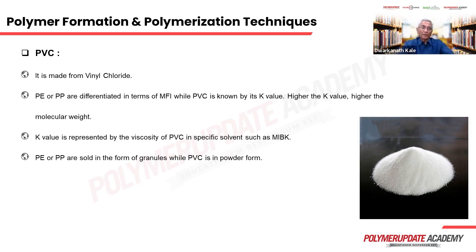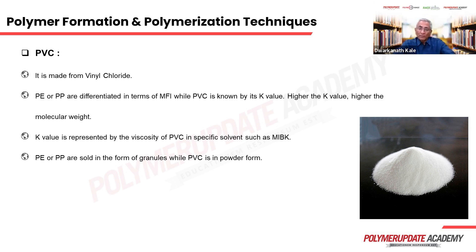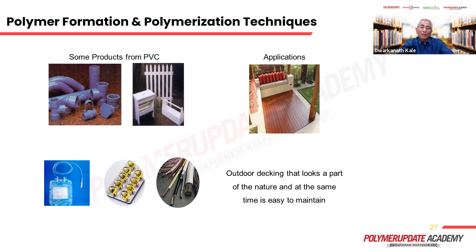PVC, polyvinyl chloride, is made from vinyl chloride. While PE and PP are characterized by MFI (melt flow index), PVC is given a K value — the higher the K value, the higher the molecular weight. K values of 57 and 67 are commonly used, but some applications require K values of 72 or 80. The K value is represented by the viscosity of PVC in a specific solvent such as MIBK. PVC is very versatile and can be used in both rigid and flexible applications.